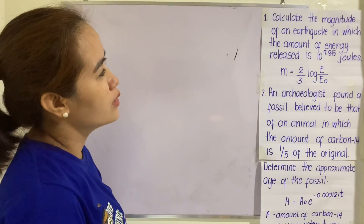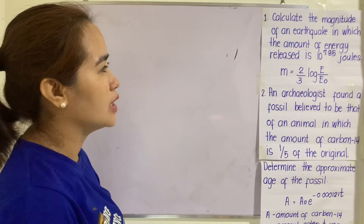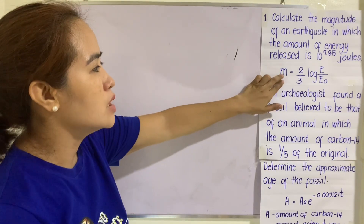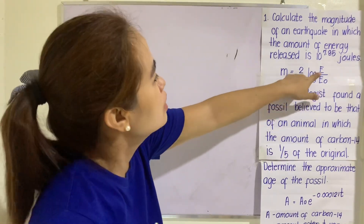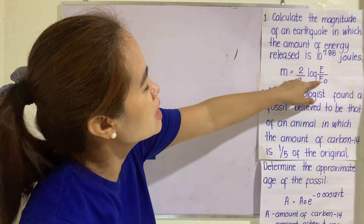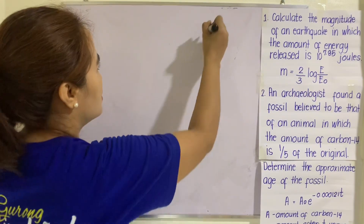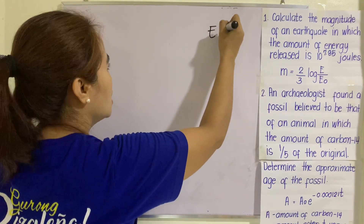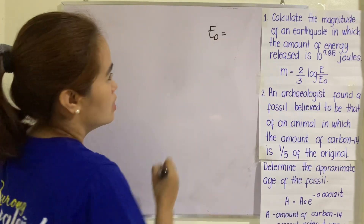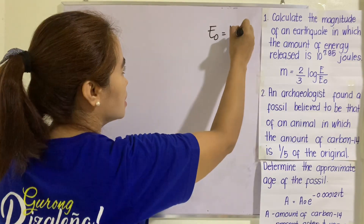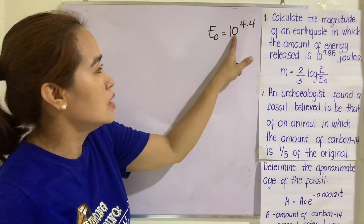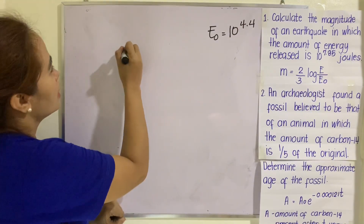Calculate the magnitude of an earthquake in which the amount of energy released is 10 raised to 7.85 joules. The formula is: magnitude equals 2 over 3 times log of E over E sub-zero, where E is the energy released by the earthquake and E sub-zero is the reference energy — a constant equal to 10 raised to 4.4.